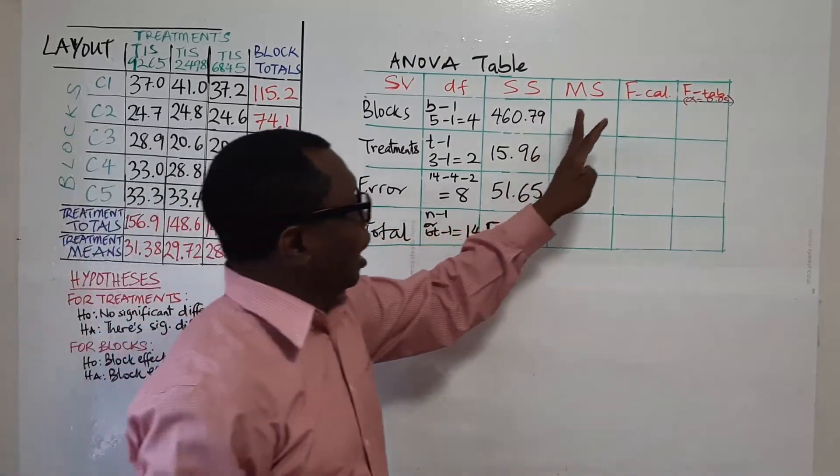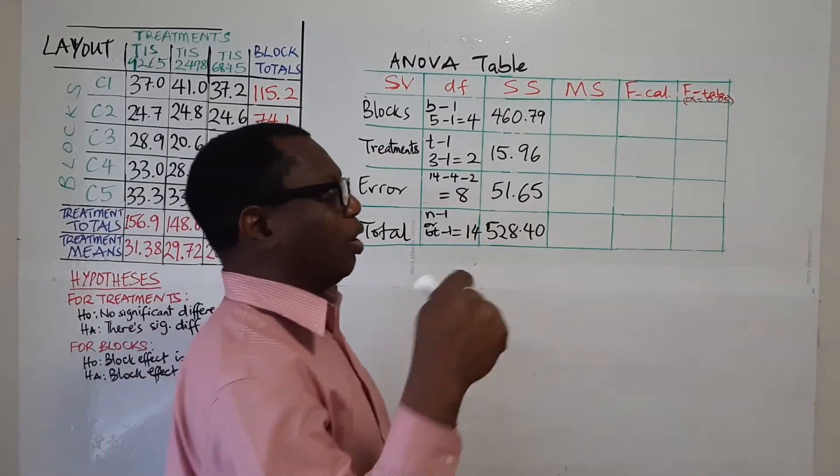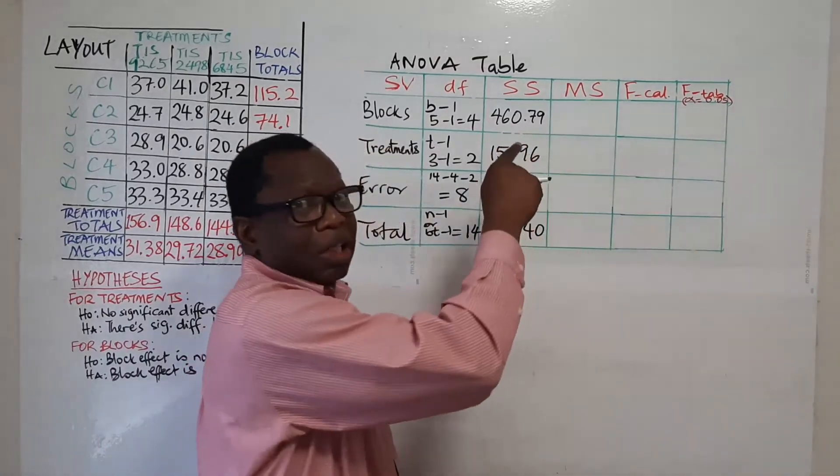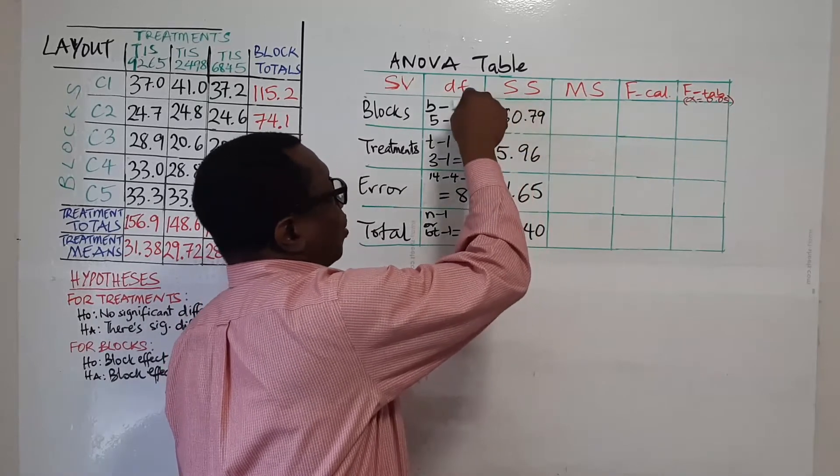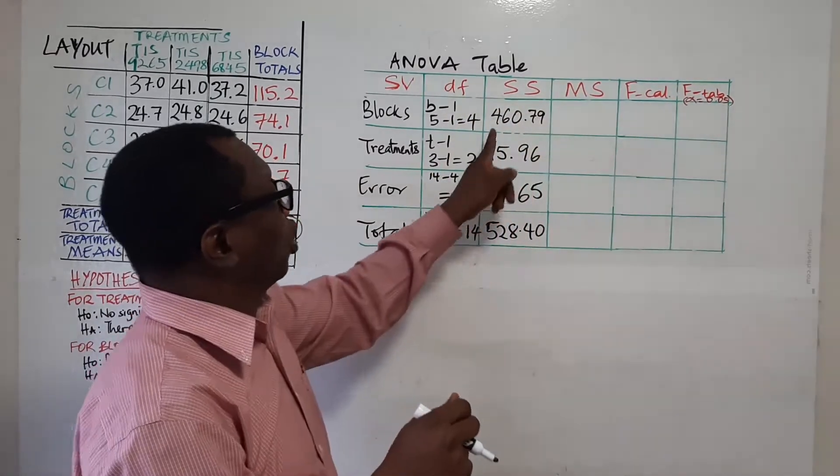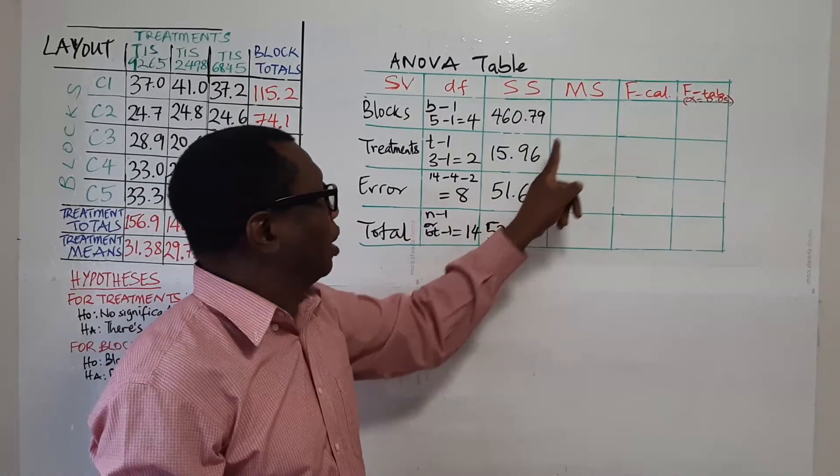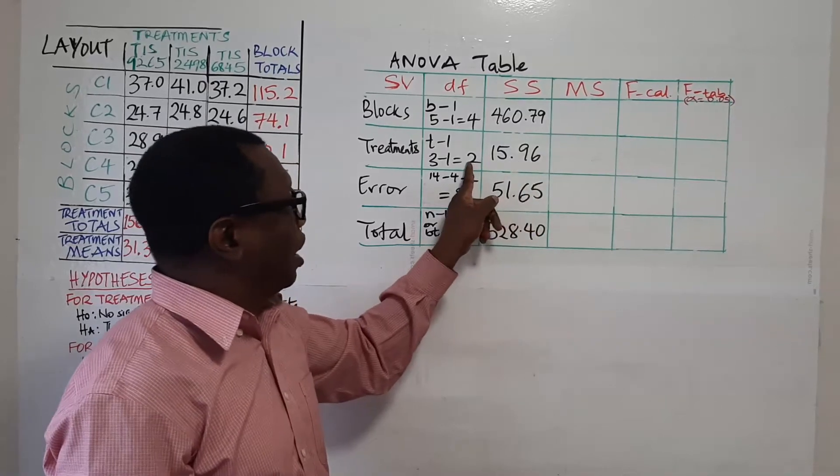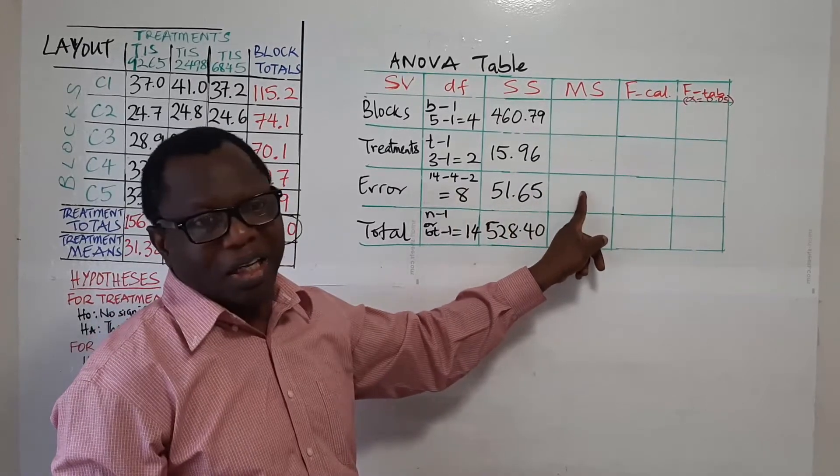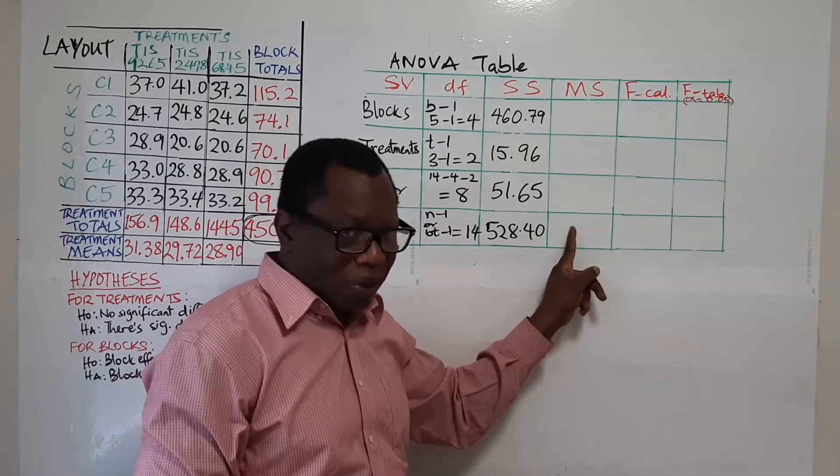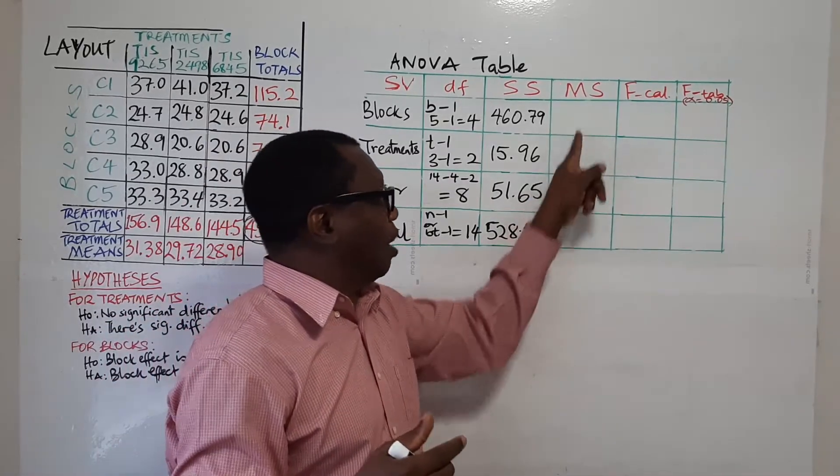So here now we move to the mean squares. Just as we did under completely randomized design, for mean squares you obtain mean squares by dividing the sum of squares by the corresponding degrees of freedom. So 460.79 divided by 4, that's what you put here. 15.96 divided by 2, you'll put that here. Then 51.65 divided by 8 will be here. For total remember, in the video on CRD we said we don't compute MS for total.